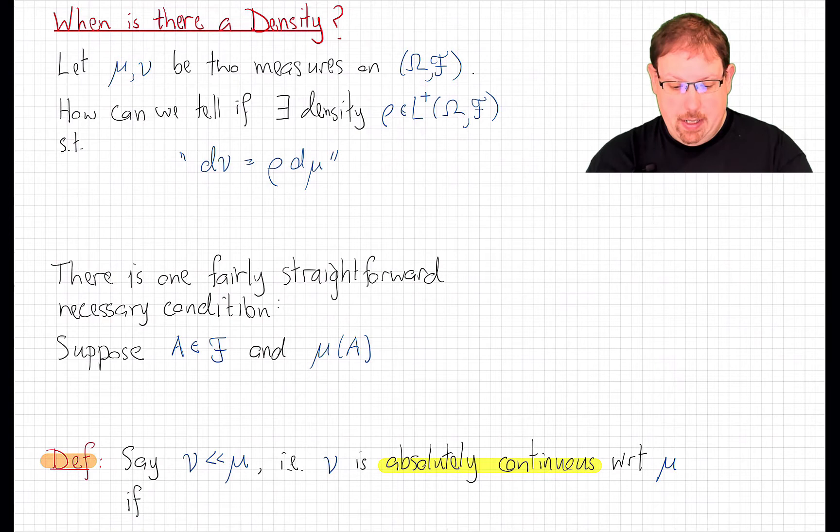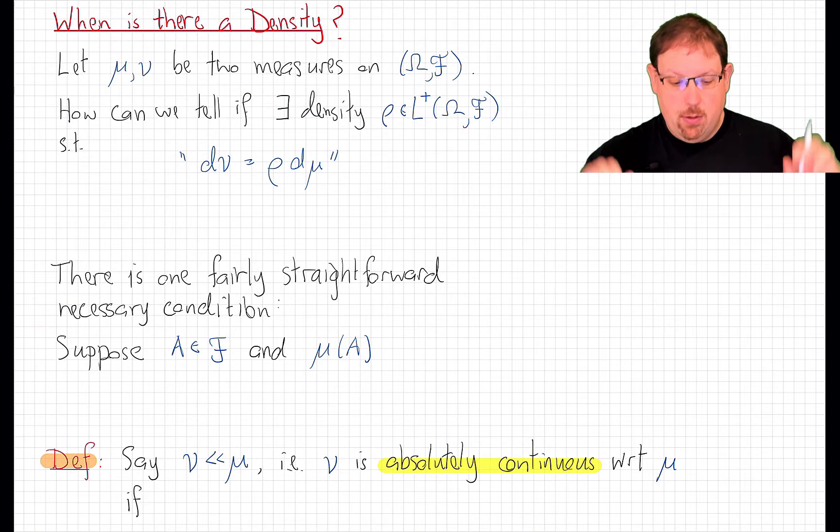Well, we'll handle those two problems in turn. The first being, when does a density exist and how do we handle the case when it doesn't? So let's think about that in more general terms. Consider a general measurable space with two measures on it. How can we tell if one of them has a density with respect to the other?